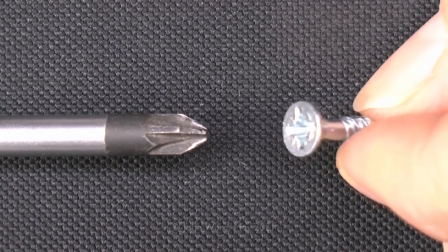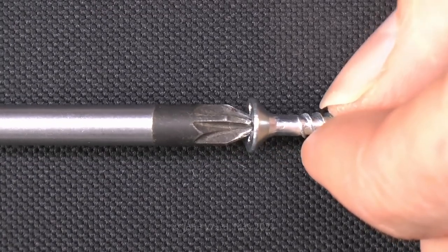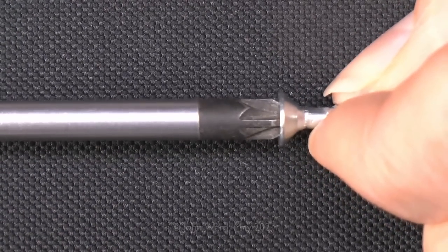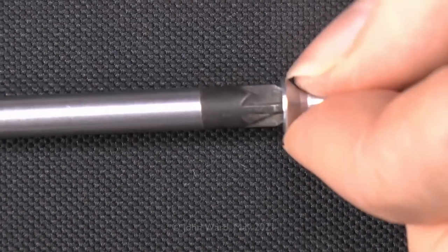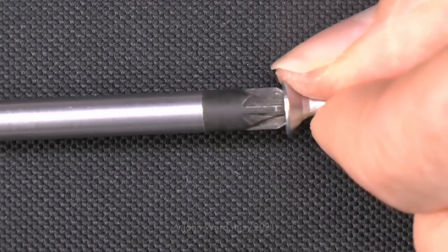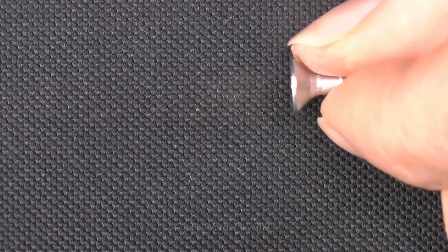Now this is what it looks like with the two together. So this is the posi screwdriver and the posi screw there. So the two fit together absolutely perfectly. And when you move the two relative to each other, there's no slop or looseness between the two. It's solidly in there, and it's not going to slip out or go anywhere else.